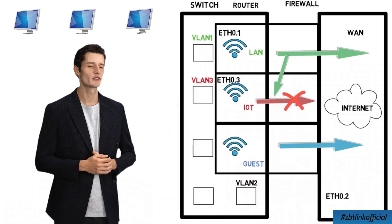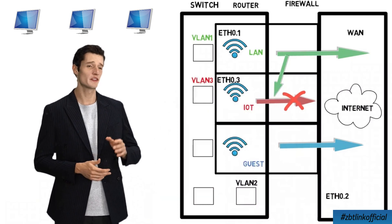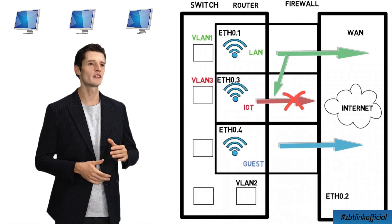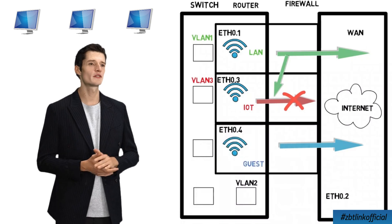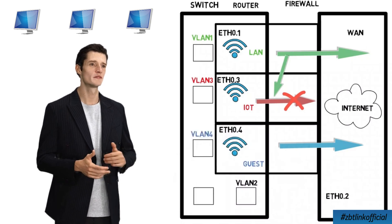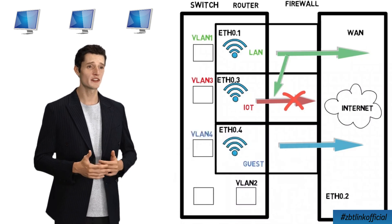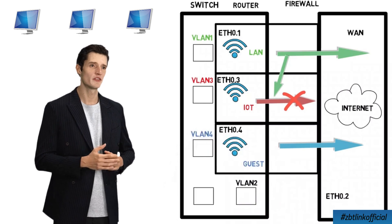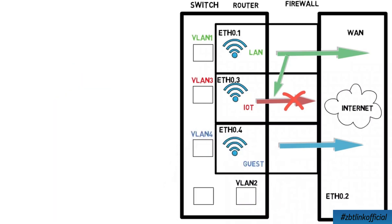If I only have one ethernet interface in my router, it would do the same thing, but rather than creating physical LANs, it would create a virtual LAN — a VLAN. It does this by adding sub-interfaces to the existing ethernet interface and mapping VLAN 1 to Ethernet 0.1 and VLAN 2 to Ethernet 0.2.